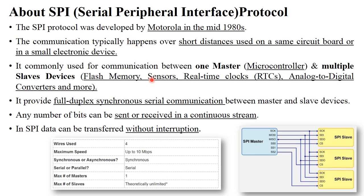Generally, master means your microcontroller and all the other remaining devices present on the same circuit board are called as slaves, like flash memory, a sensor, a real time clock, timer, and analog to digital converter. This SPI protocol performs communication between one master and multiple slaves.